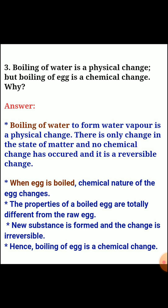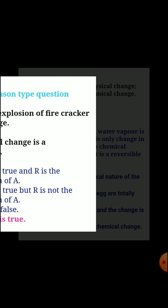Question three: boiling of water is a physical change but boiling of an egg is a chemical change. Why? Answer: boiling of water to form water vapor is a physical change - there is only a change in the state of matter, no chemical change has occurred, and it is reversible. When an egg is boiled, the chemical nature of the egg changes. The properties of a boiled egg are totally different from a raw egg. A new substance is formed and the change is irreversible. Hence, boiling of an egg is a chemical change.